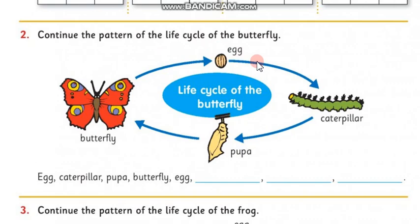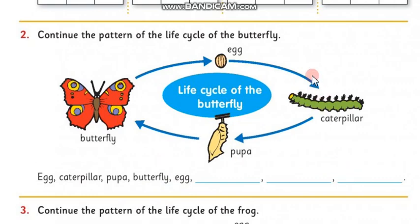That's what we call it a cycle — a pattern that goes over and over again. Here you have egg, caterpillar, pupa, butterfly, and egg — how does this pattern continue? Keep going around the life cycle. If you want more information about the life cycle of a butterfly, there's a PowerPoint on Google Classroom for you to look through.